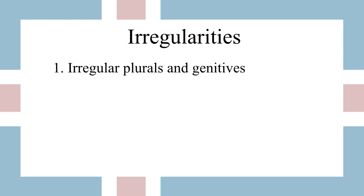The first thing we're going to look at is irregular plurals and genitives. When you look a word up in the dictionary you'll often see parentheses after it, and in those parentheses there will be two endings: the first is the genitive ending and the second is the plural nominative ending. So here for the word meaning 'valley' we see that the nominative ending is -ir even though we'd expect -ar, and that clues us in that this has an irregular plural.